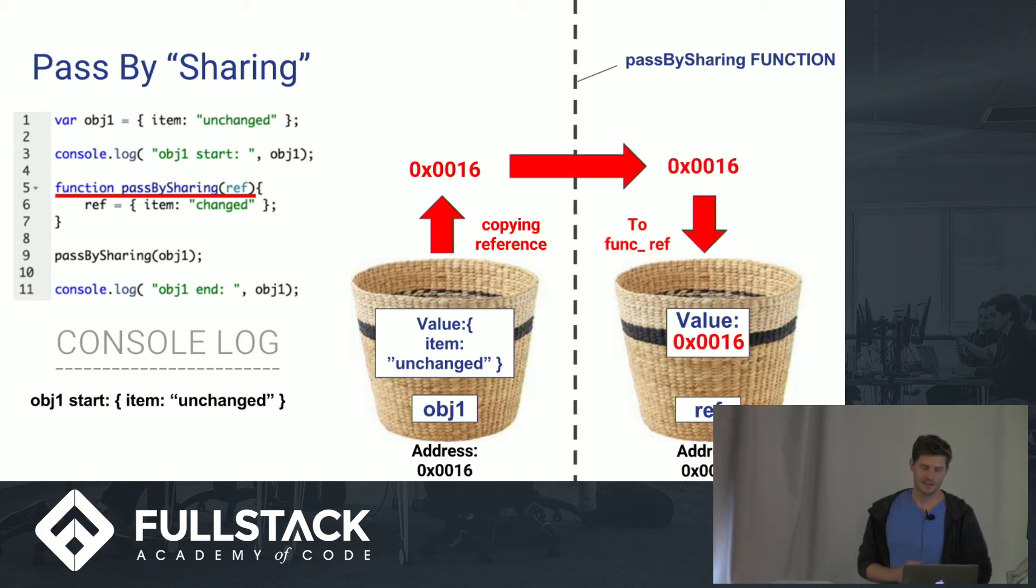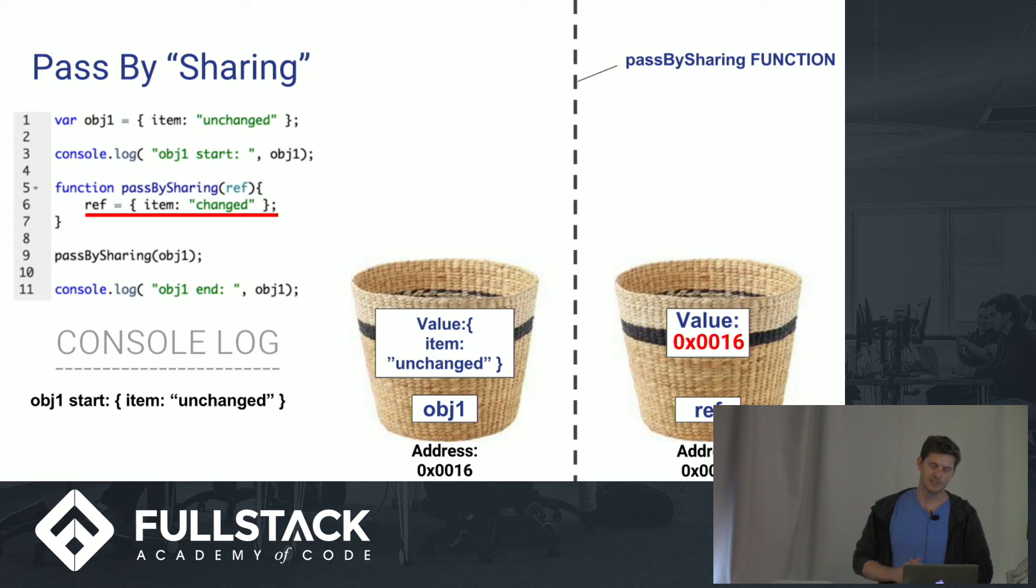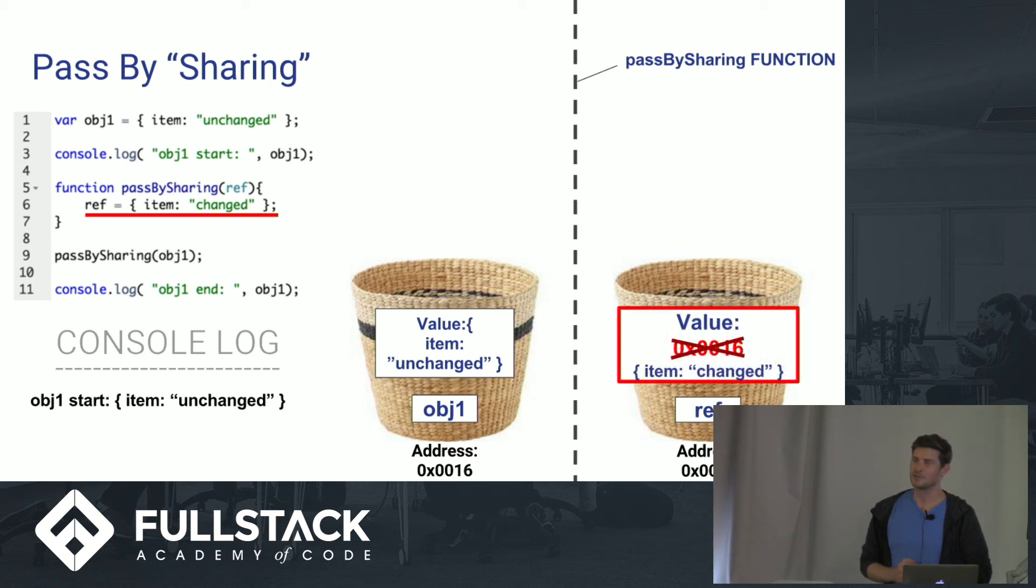So we're still copying over that address. But when we get into this pass by sharing function, the difference is, remember, before we were doing that dot operator and actually dereferencing the address. And what that meant, again, was going to that spot in memory and saying, let's change this item property. But here, we're actually overwriting our memory address, similar to what we were doing in the pass by value. So as you can see here, we've overwritten that 16 address that we had there and set it equal to an object. And that's what doesn't allow us to actually change the item property for what we're actually trying to accomplish with this step.